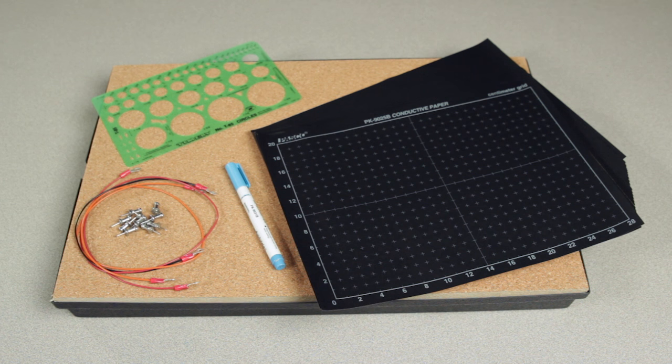The PK9023 Pasco Field Mapper Kit is a useful tool for exploring and drawing the equipotential and electric field lines surrounding a two-dimensional charge conductor.